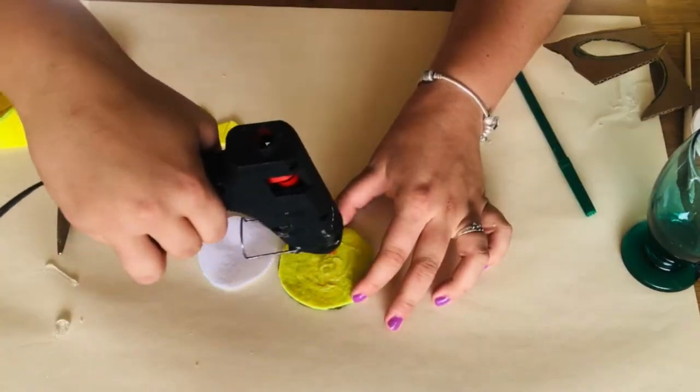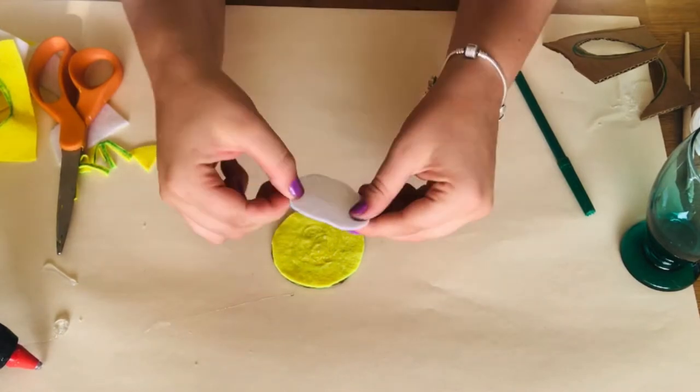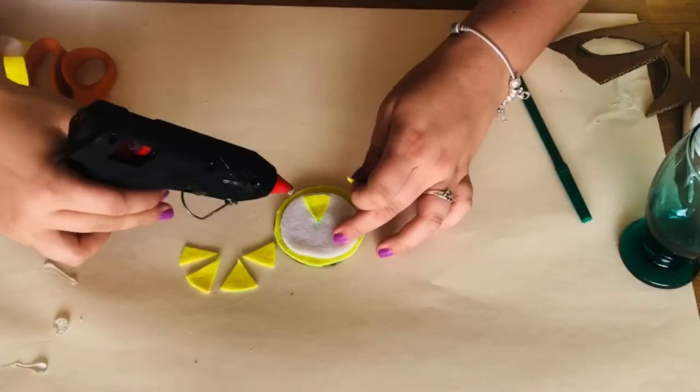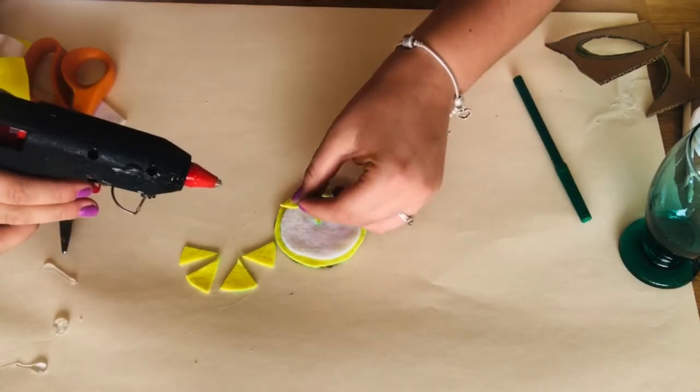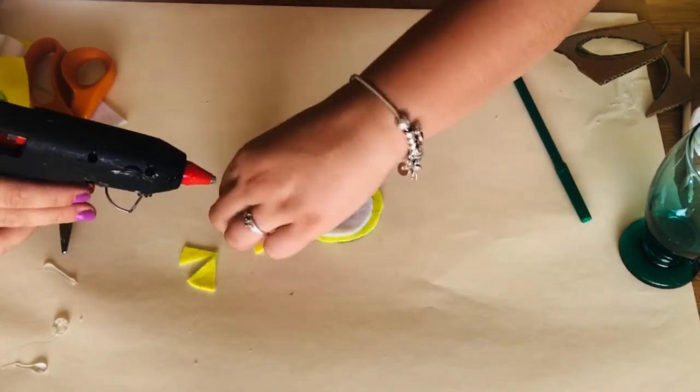Take your hot glue and you're going to hot glue on the white circle on top of your base. And press down. And then glue on your yellow triangles all on top of your white piece of felt.